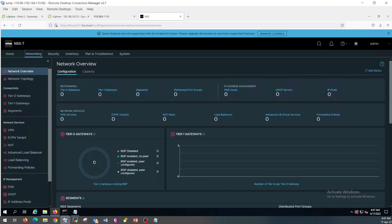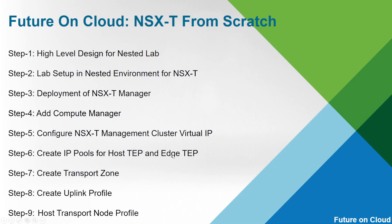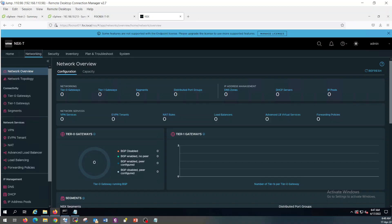So this is it for now. What I am going to do in my next video — in step 4 — is continue how to add a compute manager, and then how to configure the virtual IP. In case you have multiple NSX managers, you use the virtual IP to access them and it forwards your traffic to the active NSX manager. Thanks for watching. See you.